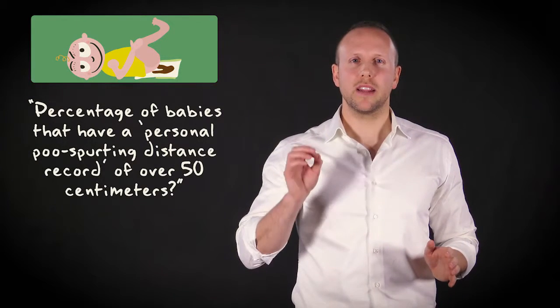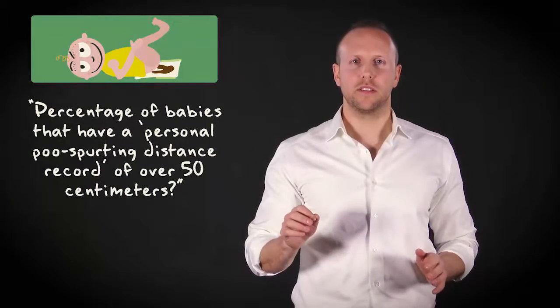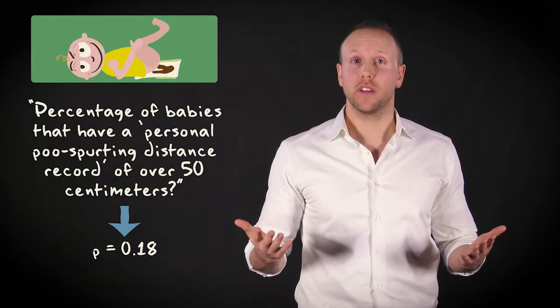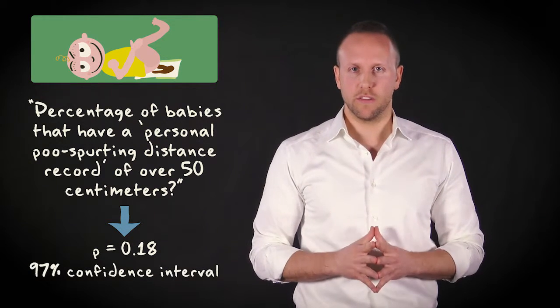Now imagine I was not interested in the population mean of the pooing distance, but in the percentage of babies that have a personal poo spurting distance record of over 50 centimeters. Suppose that 18% of the babies spurt further than 50 centimeters, and that I would like to construct a 97% confidence interval.